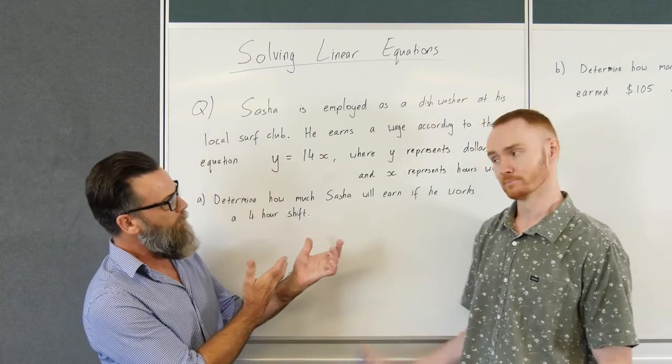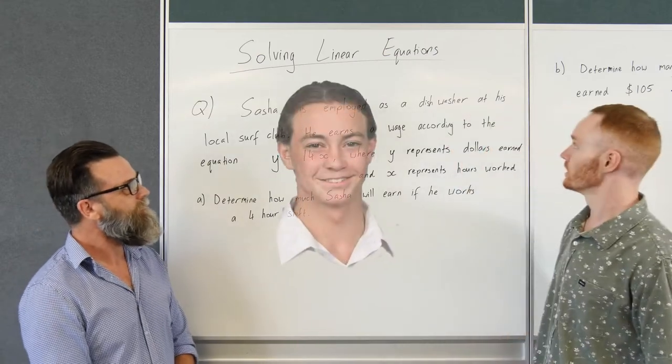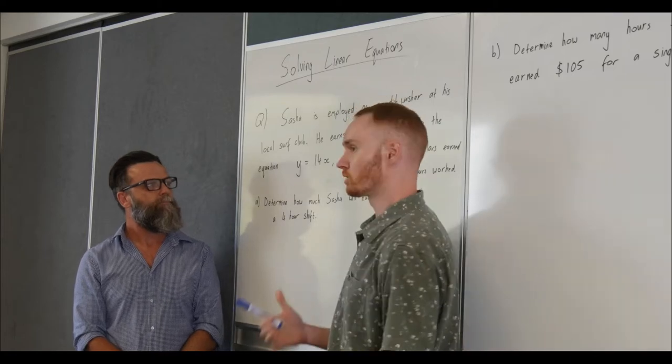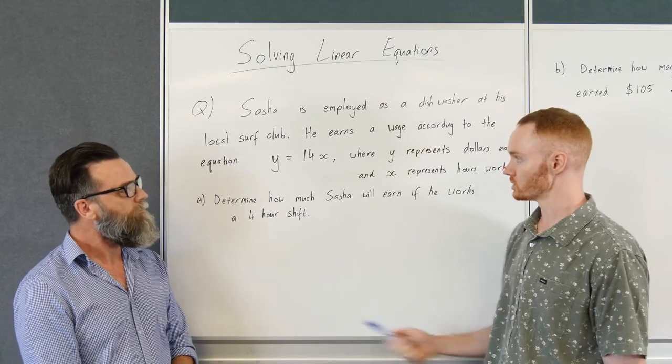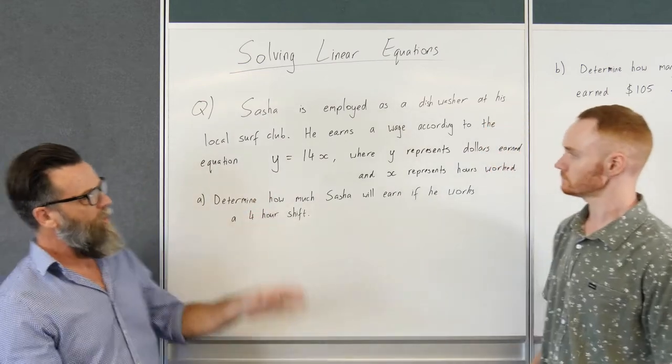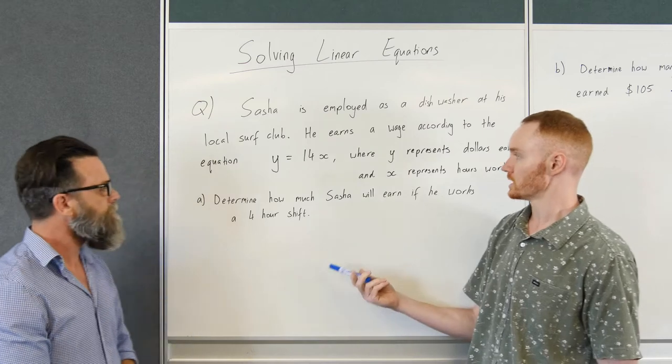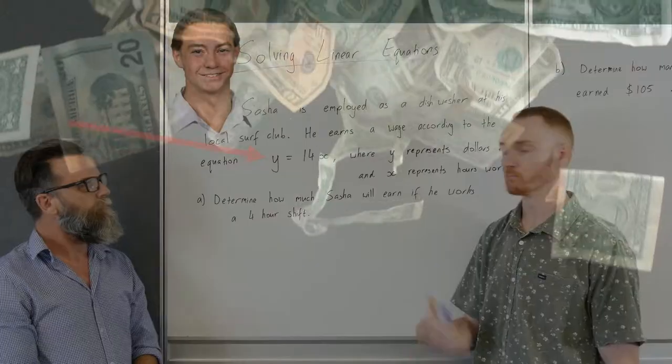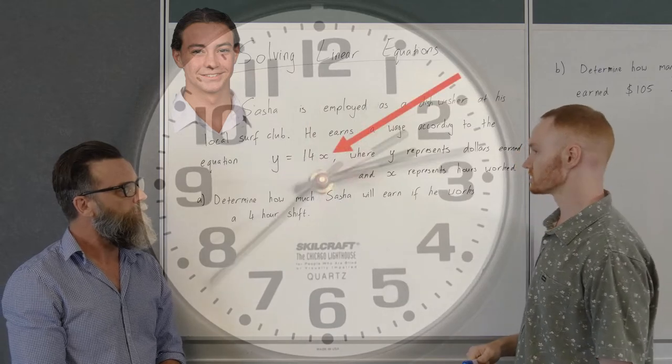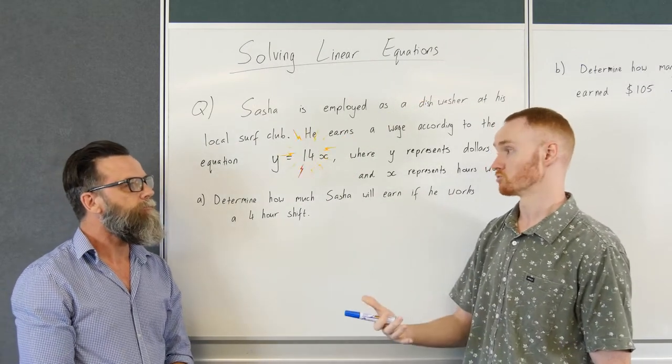I see you've got a problem up there for them already. So we've got Sasha, he's employed as a dishwasher. Now he earns a wage according to a mathematical equation, a linear equation, y equals 14x. And I remember graphing those ones and if it's linear it comes up in a straight line, right? Exactly. So in this case here we've got y equals the amount of money or dollars that he's earning and x is the number of hours he works, which are getting multiplied by 14 which is his rate.